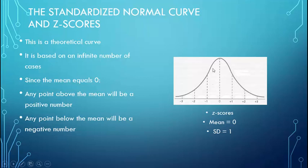But this is a mathematical theoretical curve. But when you do transform your values into z-scores in a standardized normal curve, the mean is always zero. You see that here? The mean is always zero in terms of z-scores. Any point, any score above the mean will be a positive number and you can see that. If you got a score above the mean, you would end up with a z-score that is positive. If someone got a z-score below the mean, their z-score would be negative.